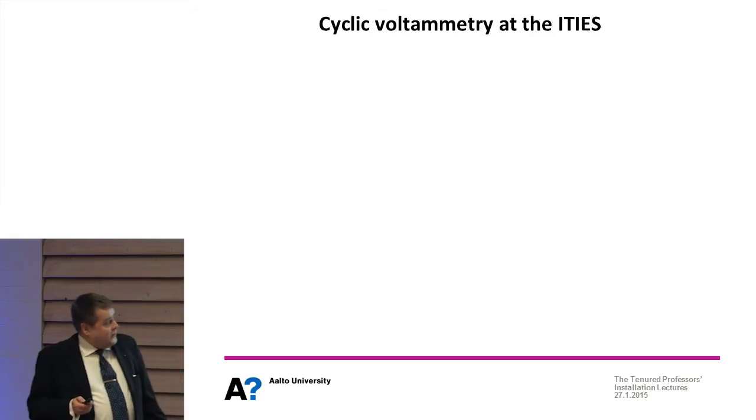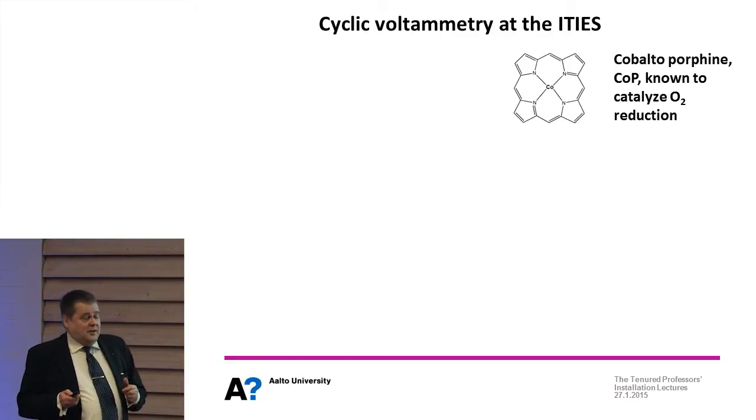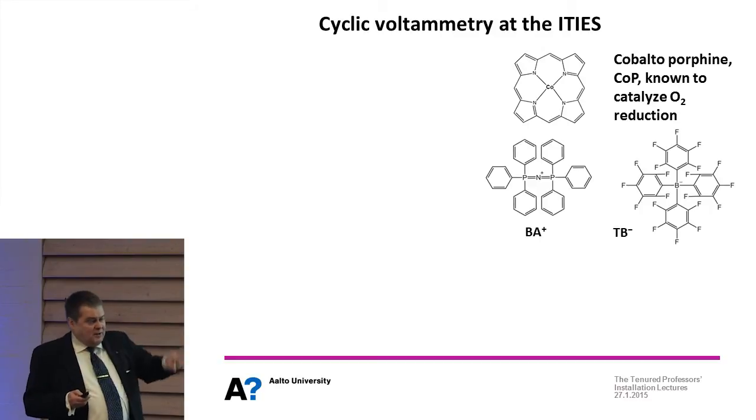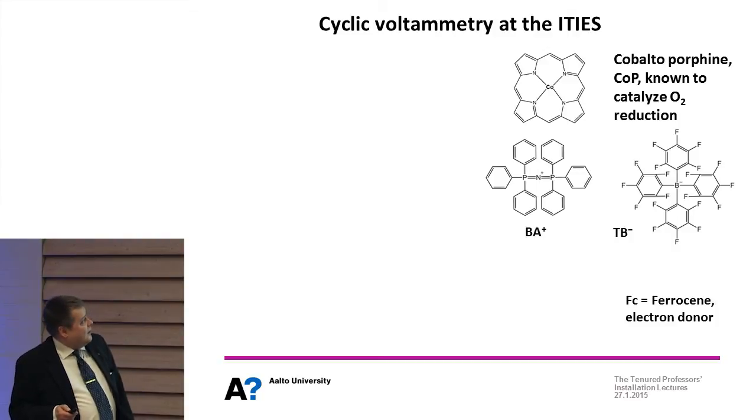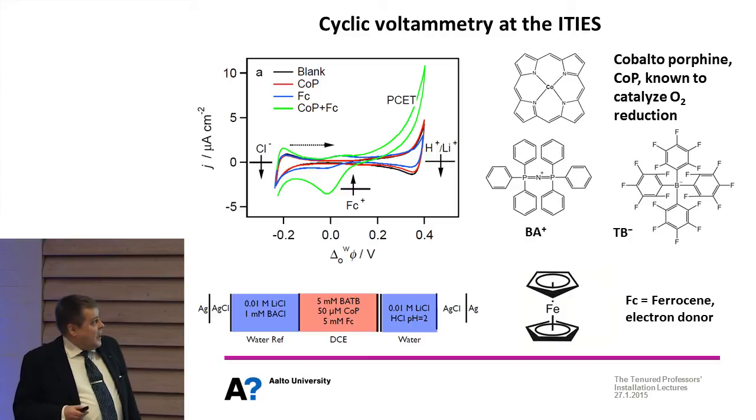First we didn't have this bimetallic catalyst, but we started with cobalt porphyrin. It's known to catalyze oxygen reduction. This is just the electrolyte in the oil phase to have some conductivity in the system, and then we have ferrocene, which is the electron donor - not cytochrome c but ferrocene. This cobalt porphyrin now plays kind of a role of the ubiquinone.